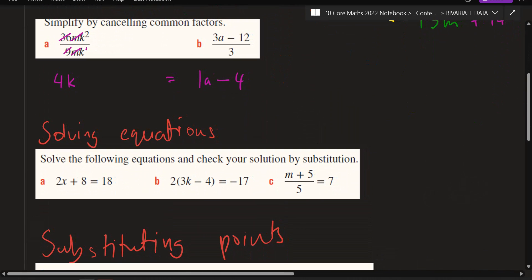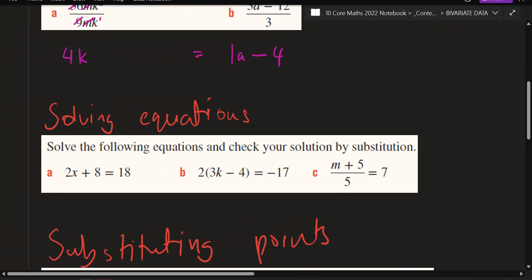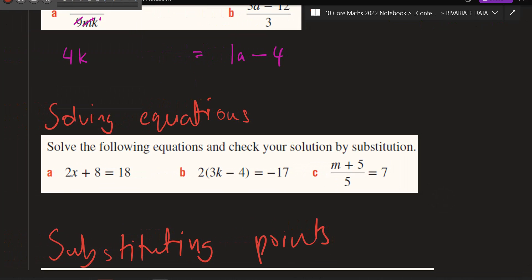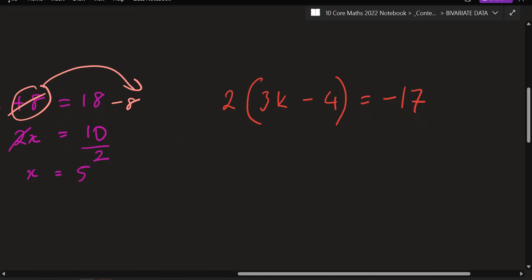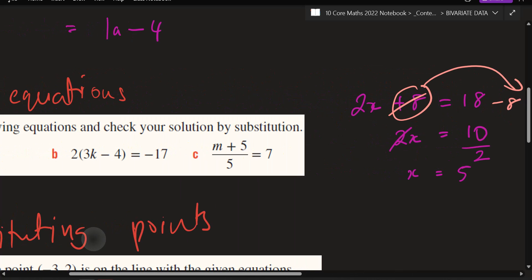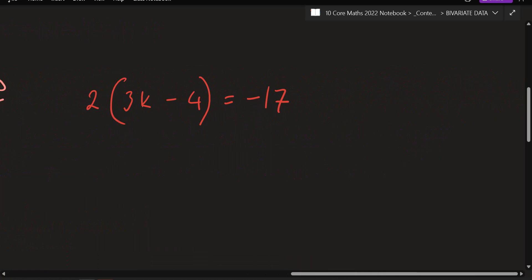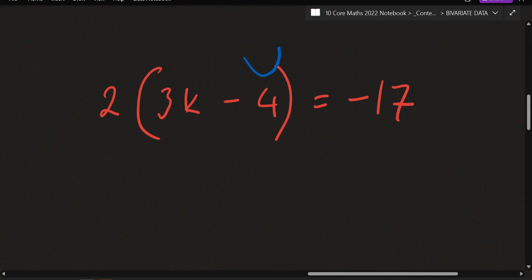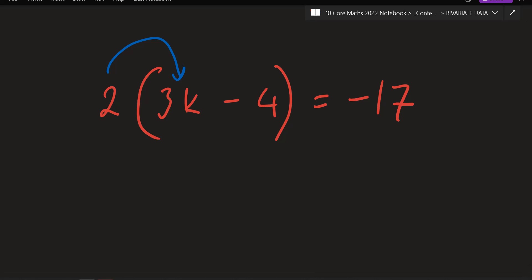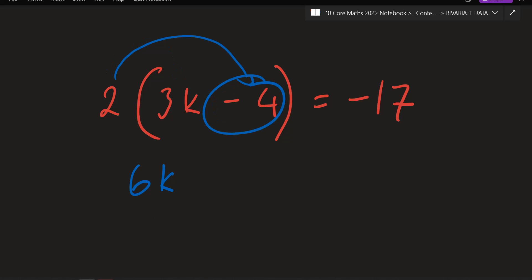If you haven't already, copy down the solving equations one and we'll do them together. This one is 2 with a 3k minus 4 in the brackets equals negative 17. These questions always start with expanding the bracket — multiply everything on the outside with the ones on the inside. So let's expand: Junior, what is 2 times 3k? 2 times 3 is 6, and you can't multiply k with anything, so it's just 6k. Next: 2 times negative 4 — what's that? Negative 8.